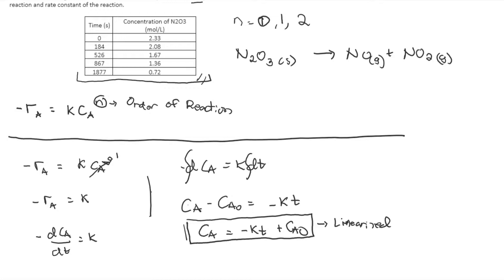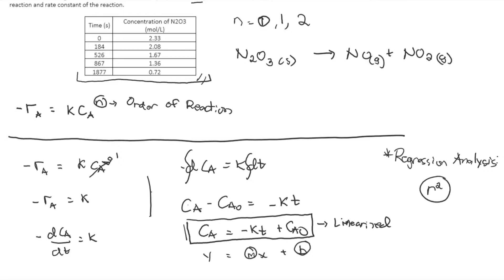By linearized, we mean it follows the form Y equals mX plus b. Once we have this form, we can use regression analysis to determine the values of m, b, and most importantly the R-squared value, because this determines whether the model is a good fit for our experimental data.